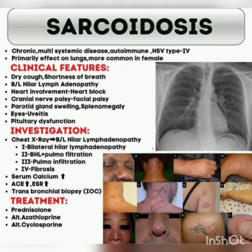Looking at the images: the sarcoidosis patient presentation includes dry cough and shortness of breath. On X-ray we see bilateral hilar lymphadenopathy. Other findings include heart block, cranial nerve palsy (facial palsy), parotid gland swelling, splenomegaly, uveitis, and pituitary dysfunction. That is all about sarcoidosis — please subscribe and share Dr. M Mass Medicine YouTube channel.